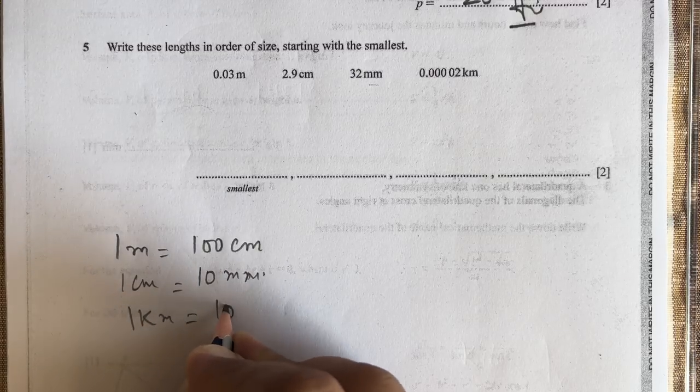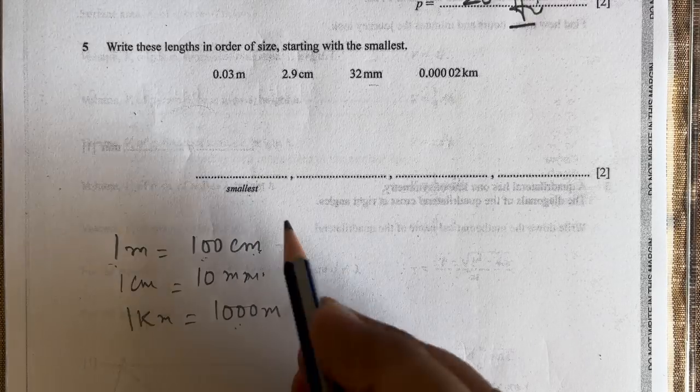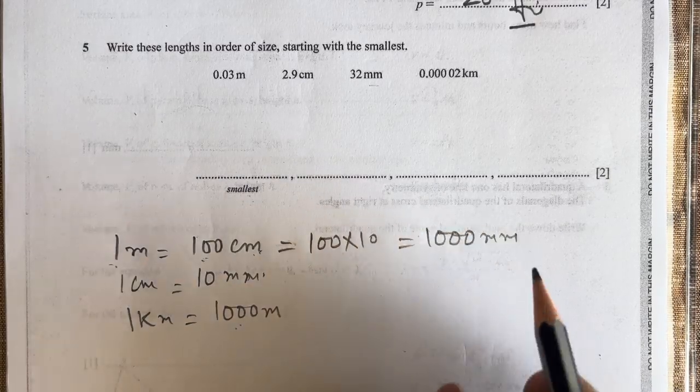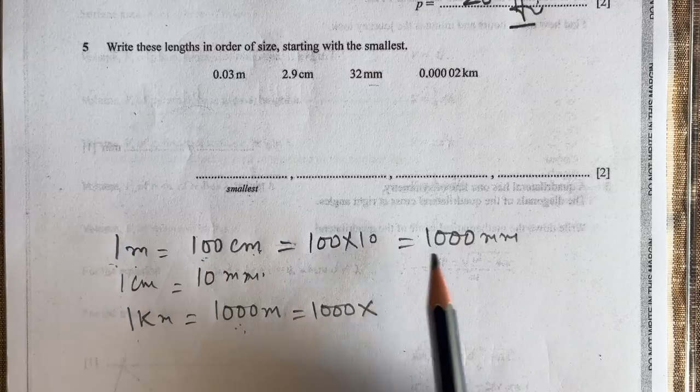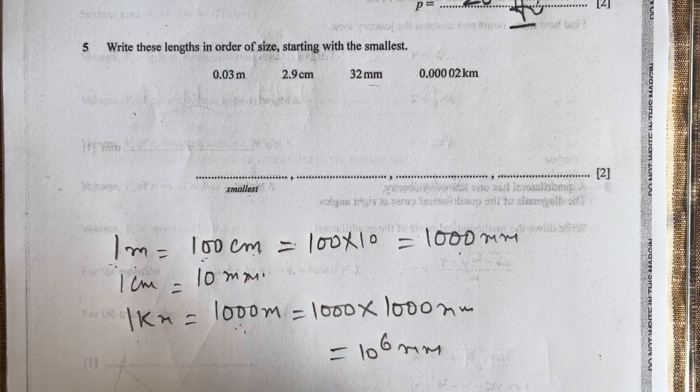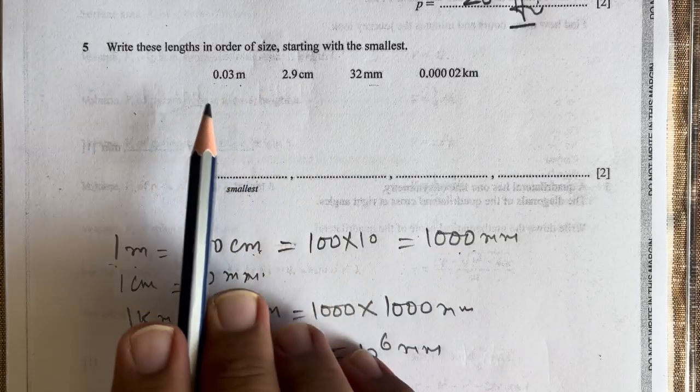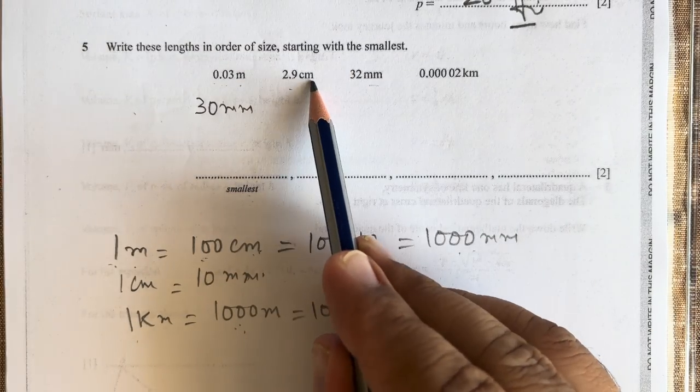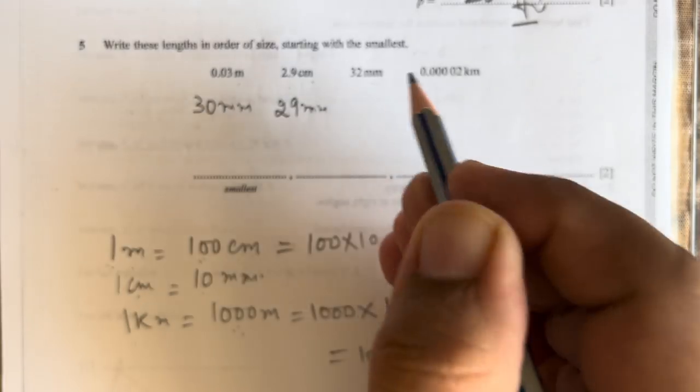1 kilometer = 1000 meters. If we convert meters into millimeters, it will be 100 × 10 = 1000 millimeters. 1 kilometer = 1000 meters = 1000 × 1000 mm = 10⁶ mm. Now 0.03 m: multiply by 1000 to get 30 mm. 2.9 cm × 10 = 29 mm. This is 32 mm.